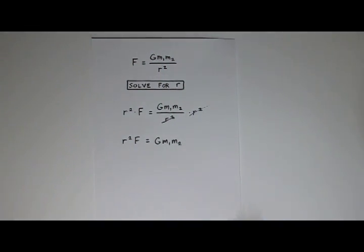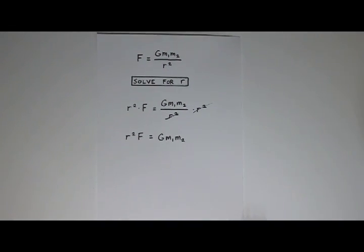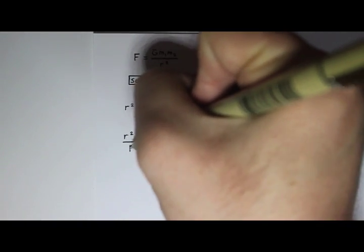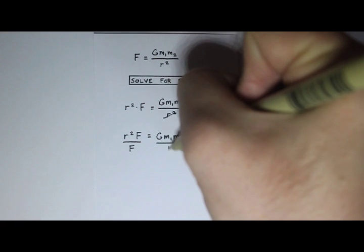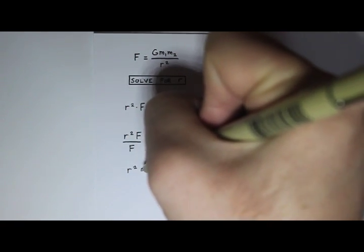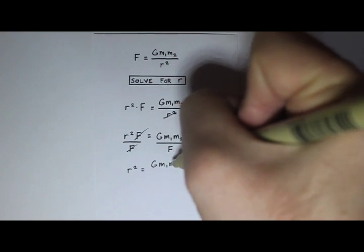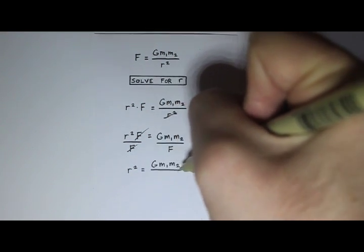Now just like before, I wanted to get the i by itself. Now I want to get the r squared by itself. So I'm going to divide out that f. So divide this side by f, and divide this side by f, and I get r squared equals, after I cancel the f's here, g m1 m2 divided by f.